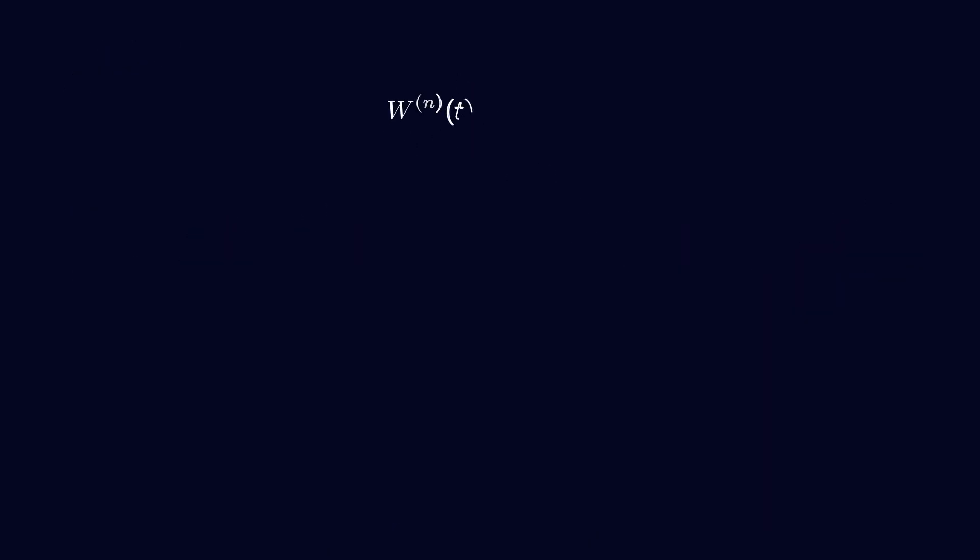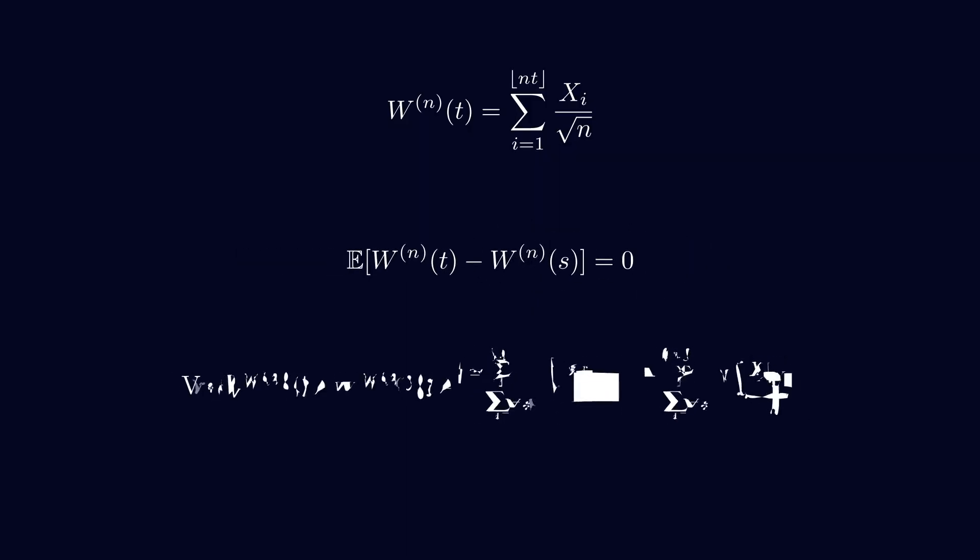Ok, so here is the precise definition of a random walk. The mean between two time points is equal to 0, and the variance between s and t is t minus s. And this is actually why we were scaling by the square root of n earlier, because those values essentially cancel each other out. And if you want to simplify, you can also have s equal to 0.